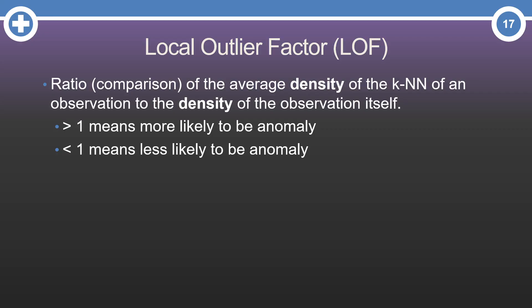So how does the local outlier factor work? Well, formally, the local outlier factor is a ratio that compares the average density of a specific observation to the average densities of that observation's k-nearest neighbors. If the density of the original observation is greater than the k-nearest neighbor points' densities, then it is a local outlier.